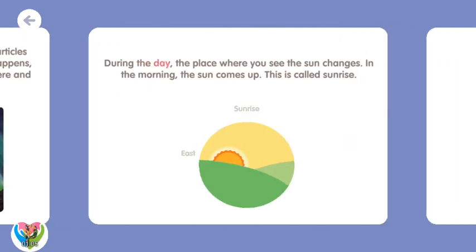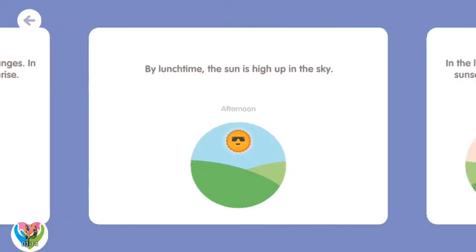During the day, the place where you see the Sun changes. In the morning, the Sun comes up. This is called sunrise. By lunchtime, the Sun is high up in the sky.